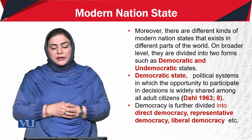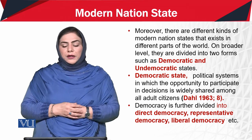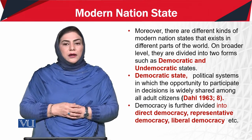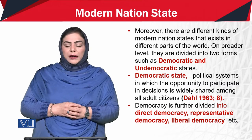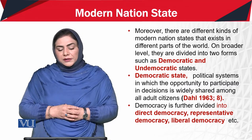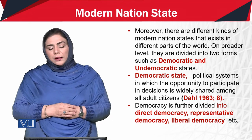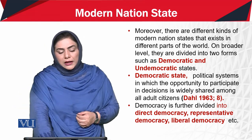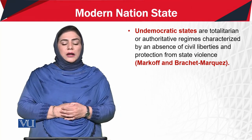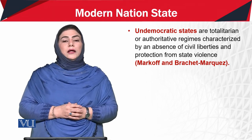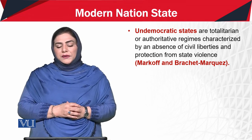There are different kinds of modern nation states existing in different parts of the world. On a broader level, they are divided into two forms: democratic and undemocratic states. Democratic states have a political system that provides opportunity to all participants, and democracy itself can be divided into direct democracy, indirect democracy, representative democracy, and liberal democracy. Undemocratic states are called totalitarian or authoritarian regimes, characterized by an absence of civil liberties and protection from state violation.